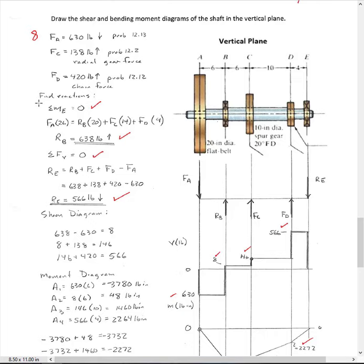Okay, so the way I did this, first step in doing shear and bending moment diagrams is to find the reactions. So what I did here is I summed the moments about E, and then I got reaction at B of 638 pounds. Again, acting upwards. So I drew my arrows properly. Then I'm going to sum the forces in the vertical direction to solve for my reaction at E, and I get 566 pounds.